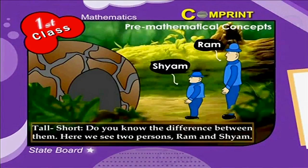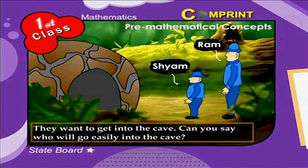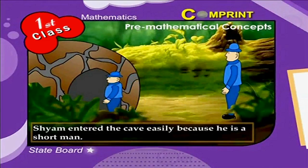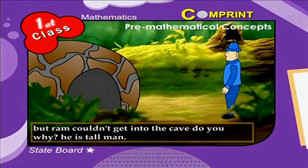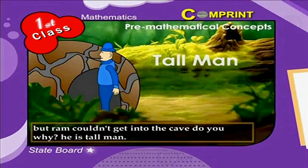The next concept is tall and short. Do you know the difference between them? Here we see two persons, Ram and Shyam. They want to get into a cave. Can you say who will go easily into the cave? Shyam entered the cave easily because he is a short man, but Ram couldn't get into the cave.